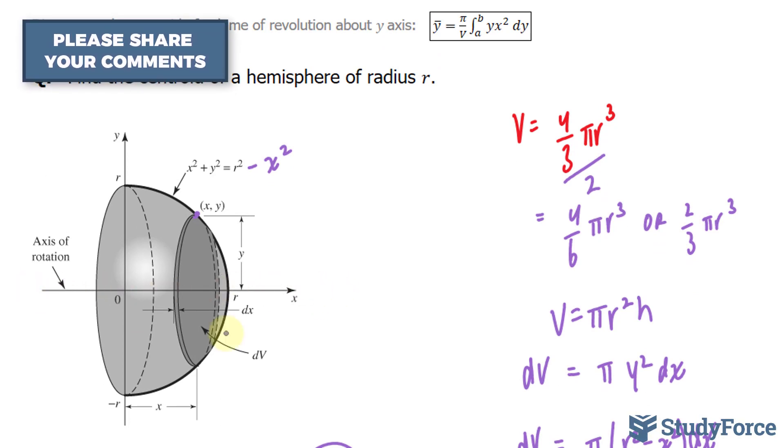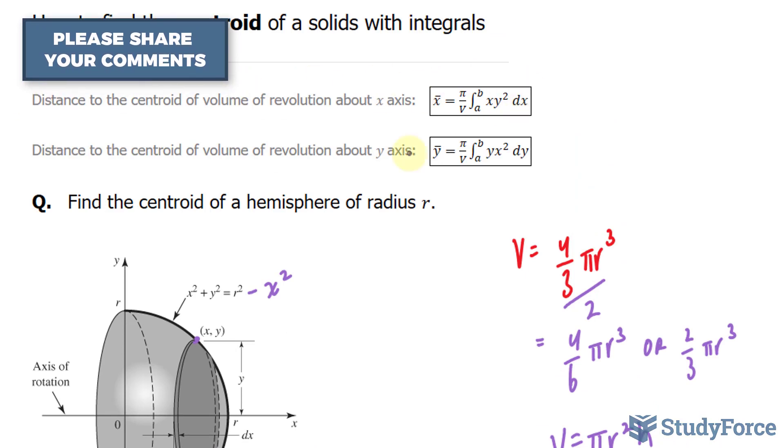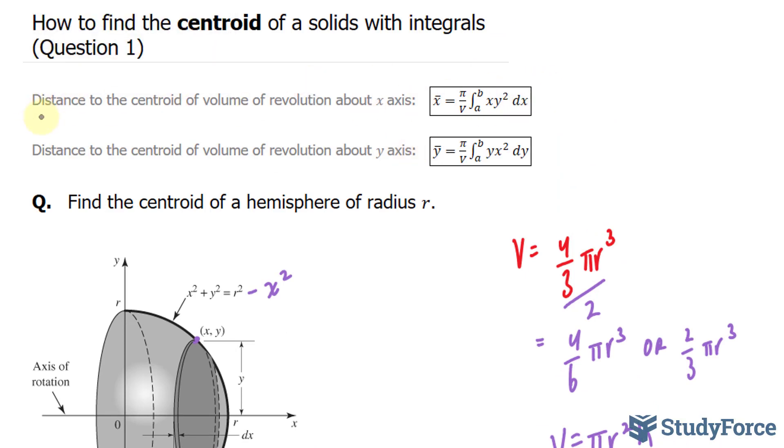All of this can be summarized using these two formulas, namely the first one, when the distance of the centroid of the volume is about the x-axis. If you had the opposite, you would be using this formula. So there you have it. That is how to find the centroid of 3D objects with integrals.